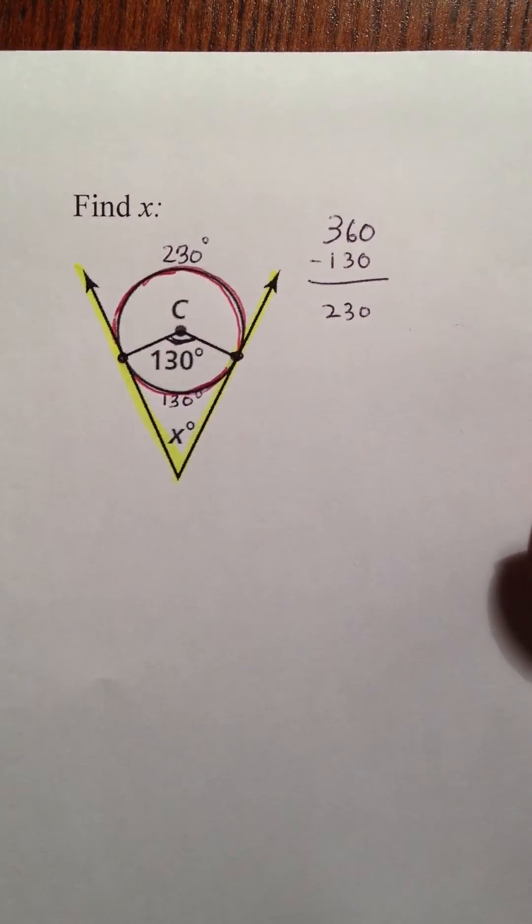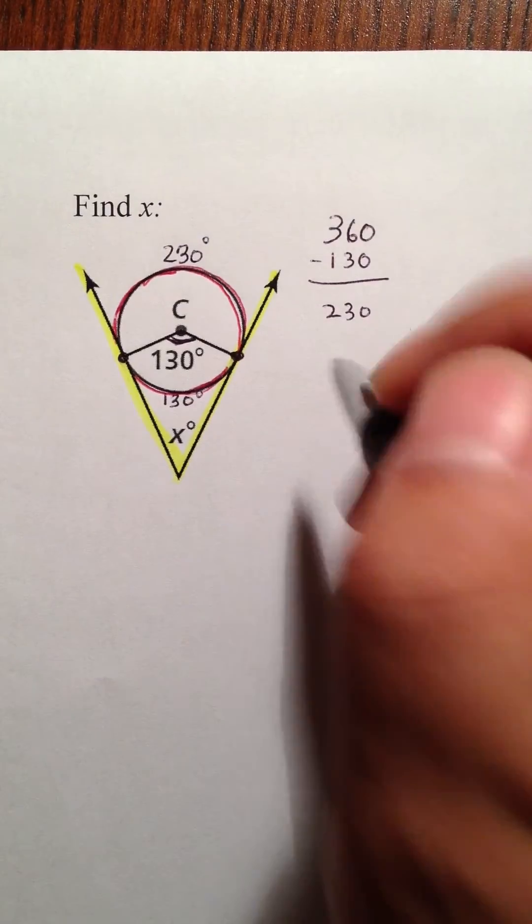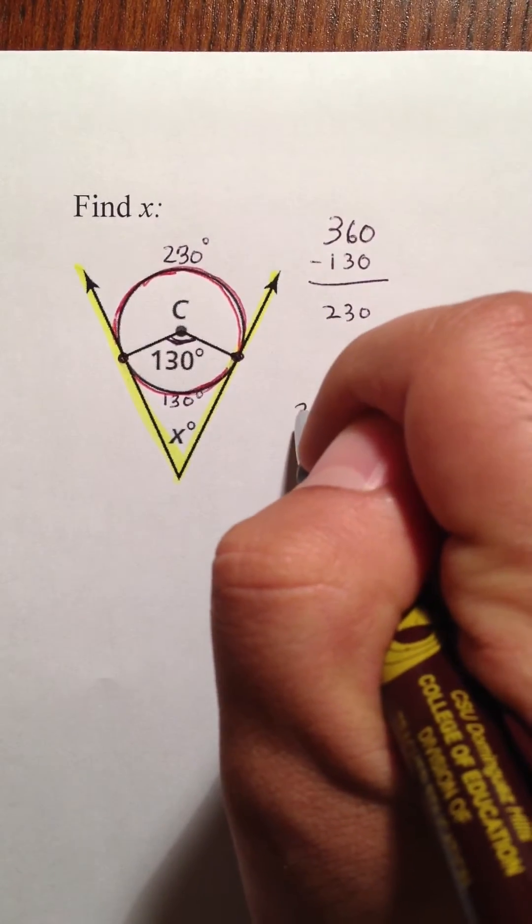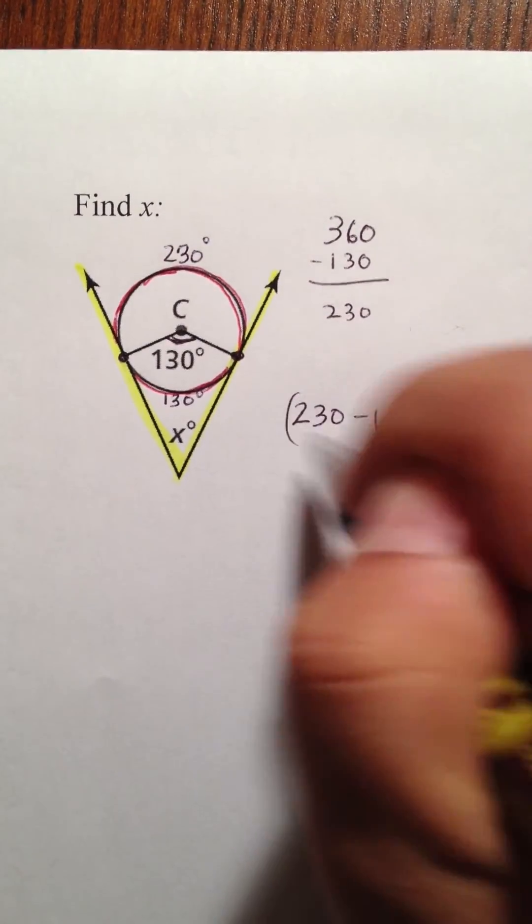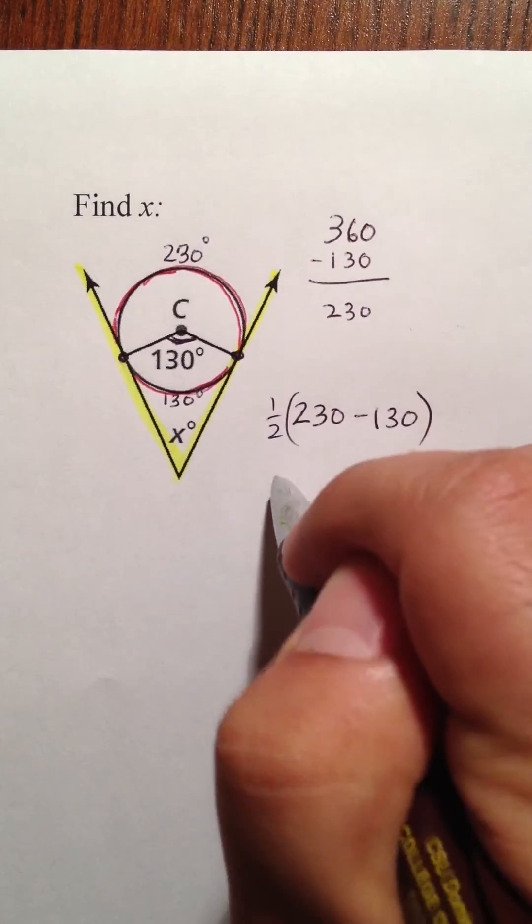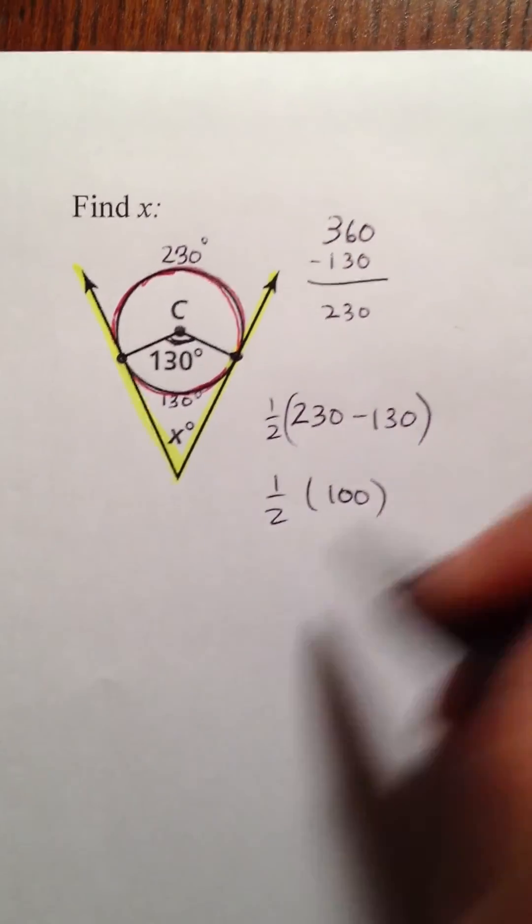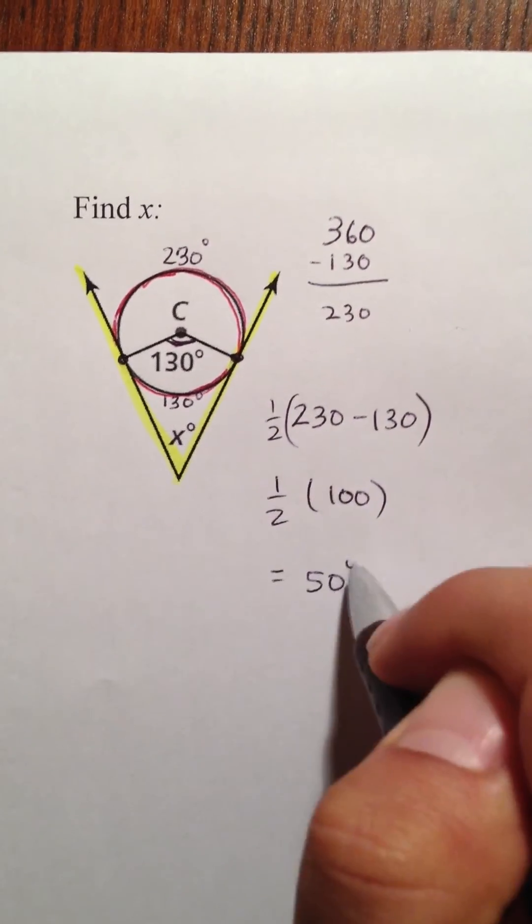And just like our previous problem, what you're going to do is you're going to take the bigger arc, subtract the smaller arc, and then cut that in half. So, one half of 100 equals 50 degrees.